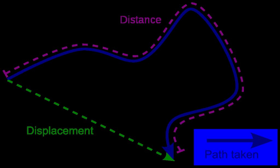A displacement is a vector whose length is the shortest distance from the initial to the final position of a point P.